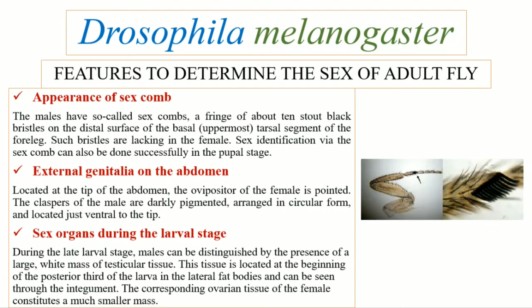The males of Drosophila melanogaster contain sex combs. A sex comb is basically a fringe of about 10 stout black bristles. As you can see in this figure, the sex comb is located on the distal surface of the basal — basal means uppermost — that is the tarsal segment of the foreleg. These bristles are absent in females. Sex identification using the sex comb can also be done at the pupal stage.